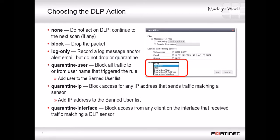For each filter in the DLP sensor, you must indicate the action — what FortiGate should do if the traffic matches. The default setting is Log Only. If you're not sure which action to choose, this can be useful initially. Select it while you study your network to see what sensitive information is being transmitted, then later select the most appropriate action to block sensitive files or quarantine them.